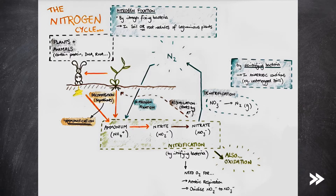Let's start with the nitrogen cycle, which we need to know in a bit more detail. If we begin with plants and animals, these contain nitrogen in the form of nitrogen-containing organic compounds, like proteins and nucleic acids such as DNA and RNA. When these organisms die, or excretions like urea and faeces undergo decomposition by saprobionts. This process is known as ammonification, as it produces ammonium NH4+ ions.